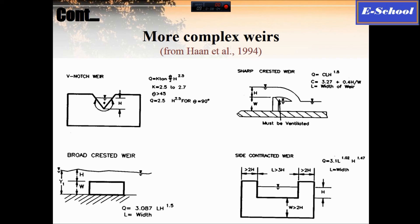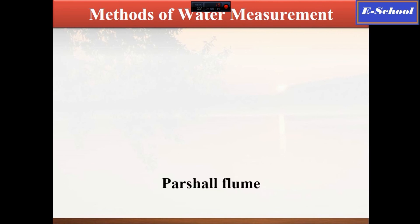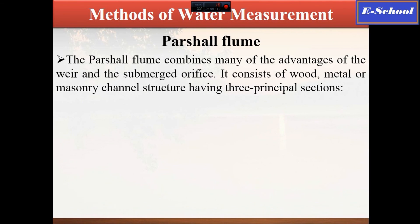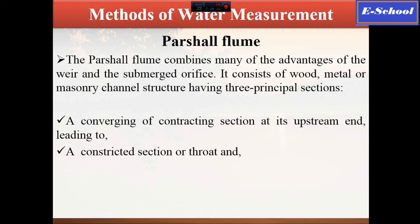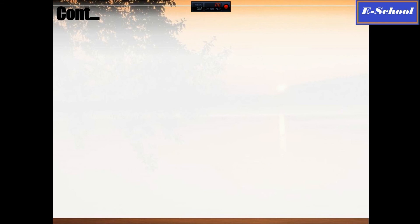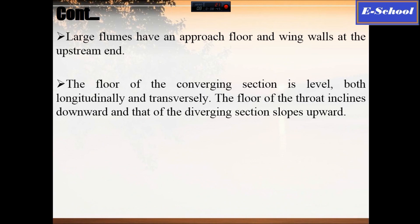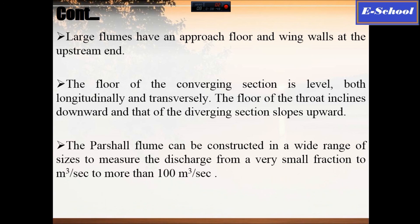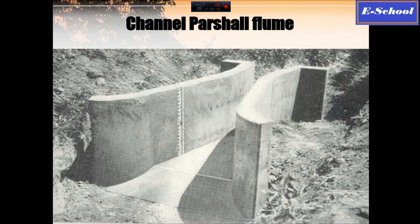The last measuring device is the Parshall flume. It combines many of the advantages of the weir and the submerged-orifice case. It consists of wood, metal, or a general concrete structure having three principal sections. These sections are given on the slide — you can pause the video and read from the slide.